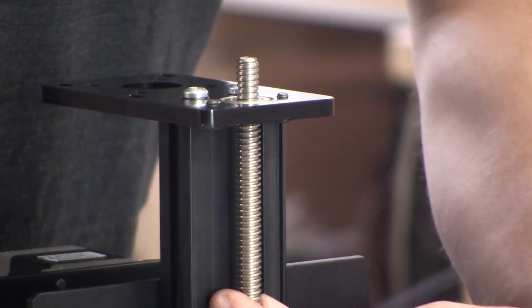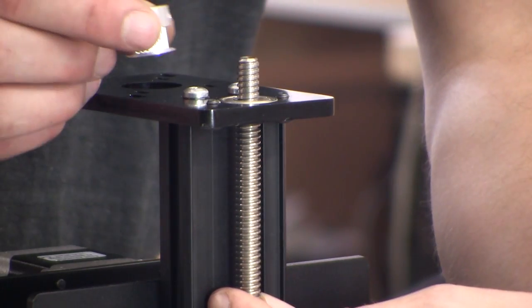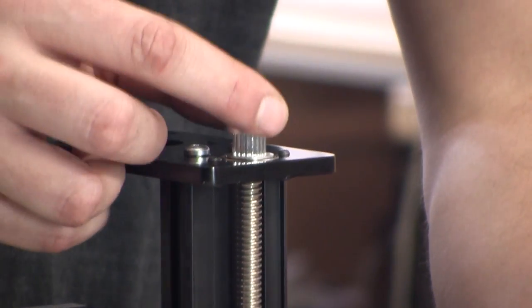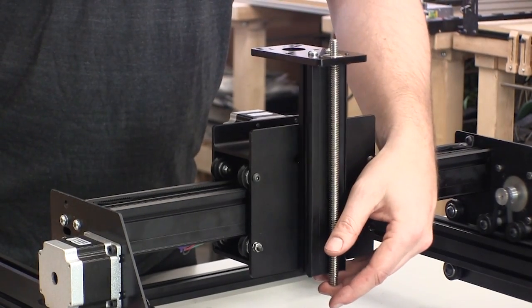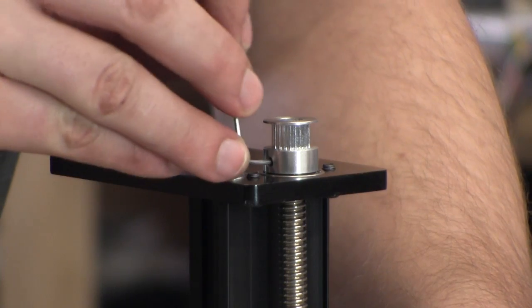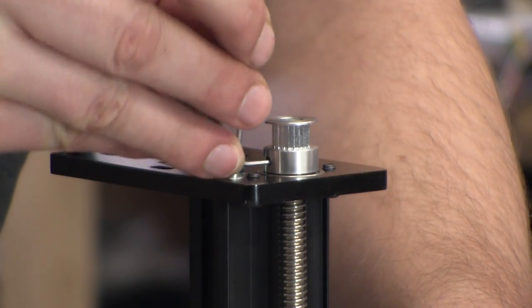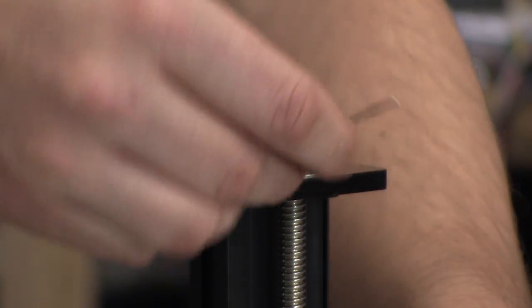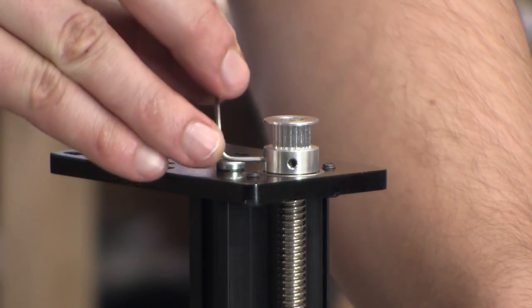Insert it through the flange bearing and put the pulley over the top of the Acme rod. You'll want to keep constant pressure on the Acme rod in the upwards direction while you tighten the set screws on the pulley. When you're done, there should be no slop between the bottom of the pulley and the flange bearing.